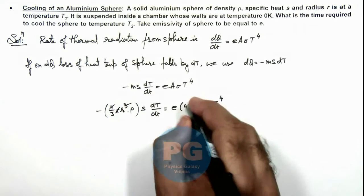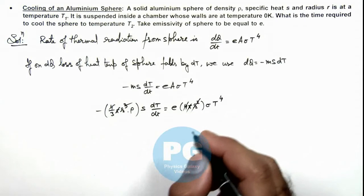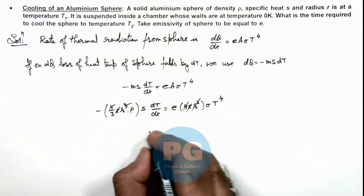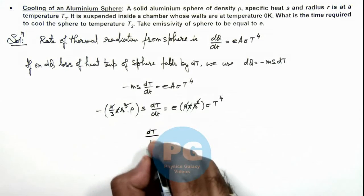Here 4π and this r² gets cancelled out, and further rearranging the terms we'll be having dT/T to power 4.